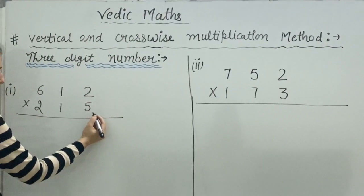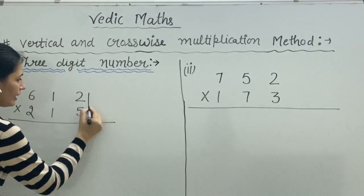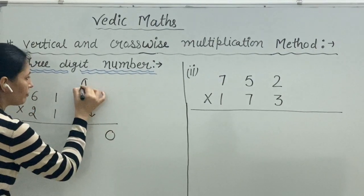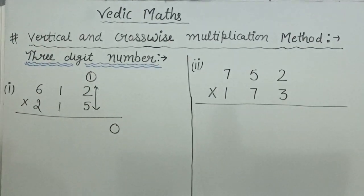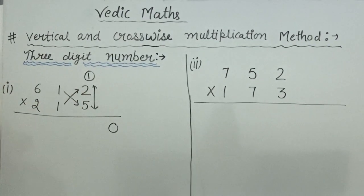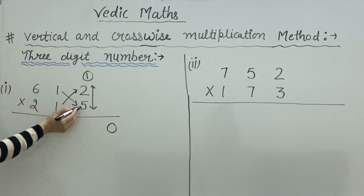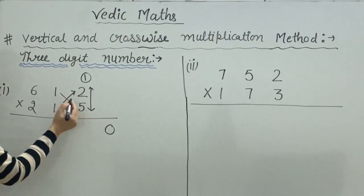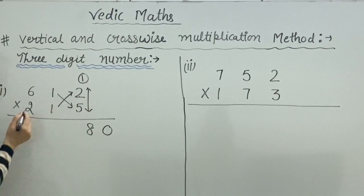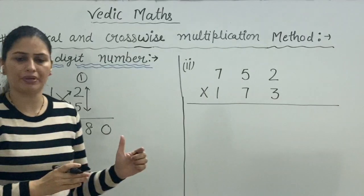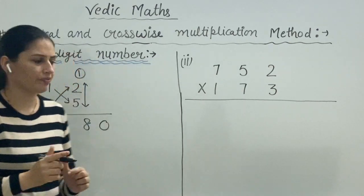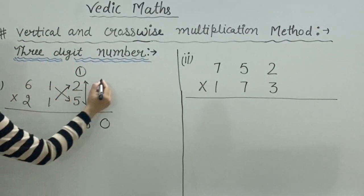Our first step is vertical multiplication: five twos are ten, so we put zero here and one as a carry. Then we do crosswise multiplication taking two digits: five ones are five, and two sevens plus one eight.